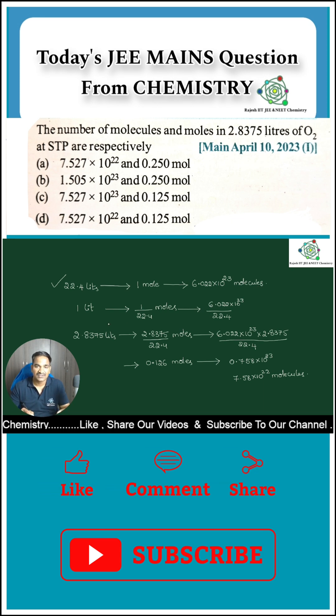So these 22.4 liters I am making into one liter. One liter is equal to one by 22.4 moles and Avogadro number divided by 22.4. But according to the problem they are asking about 2.8375 liters.